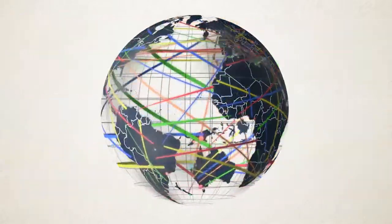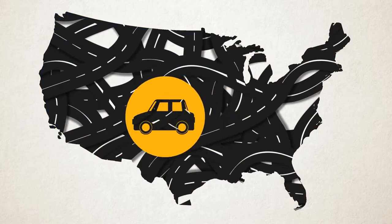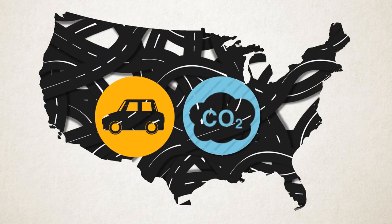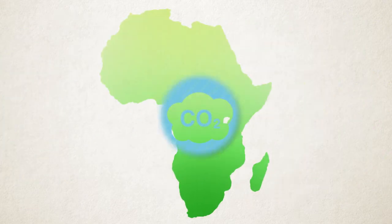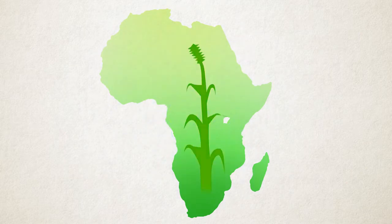For example, energy use in the United States drives changes in carbon build-up and climate change, which then reduces agricultural production in Africa and elsewhere.